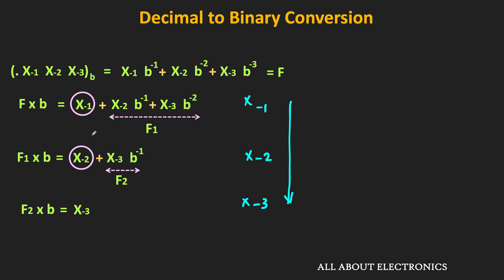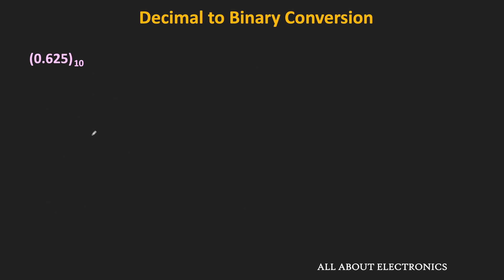Similarly, by successively multiplying the decimal fractional number by the factor of 2, we can convert it into the equivalent binary number. Let's take one example. We want to convert the fractional decimal number 0.625 into the binary equivalent. First, multiply by 2: the result is 1.25. Here, 1 is the integer part while 0.25 is the fractional part. We write down this integer part separately. Multiplying the fractional part 0.25 by 2 gives 0.5, where the integer part is 0 and the fractional part is 0.5.